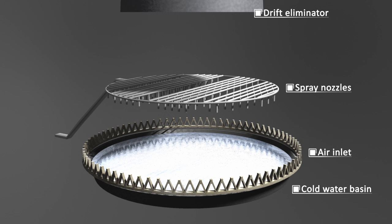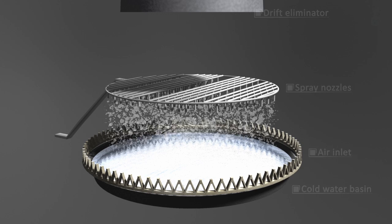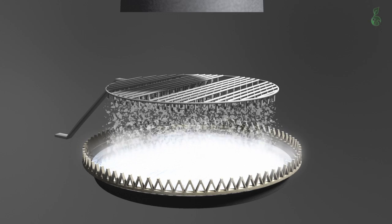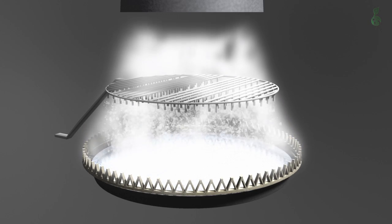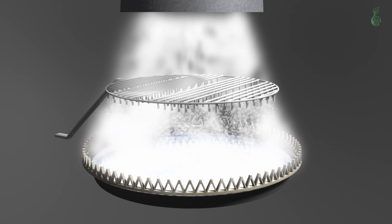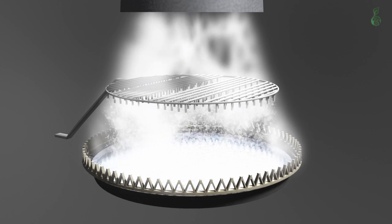Hot water is pumped to the spray nozzles. Natural convection draws cold air in from outside. The cold air cools the water. During this process about 2% of the water evaporates. This can be seen as plumes of steam.